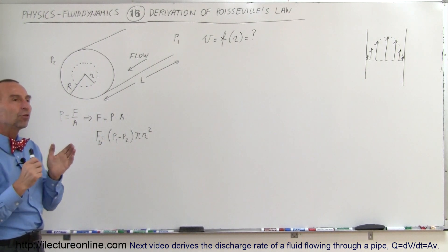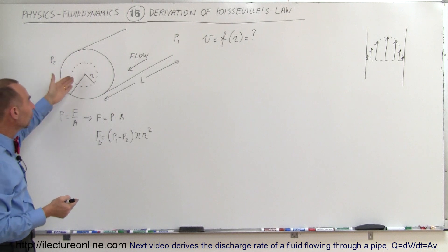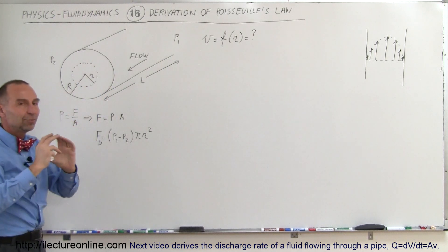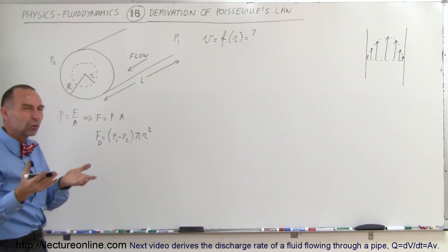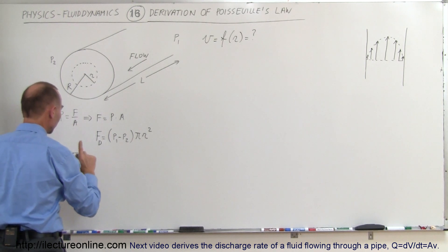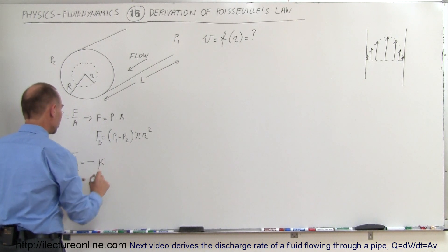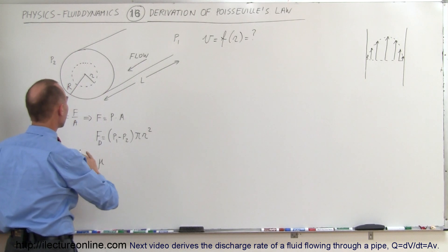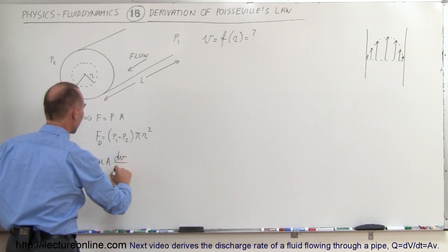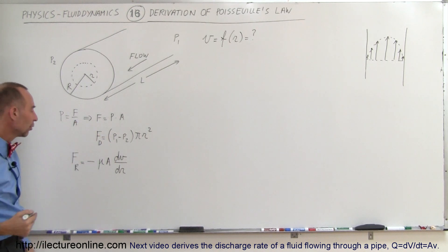Now we also need the retarding force — what's holding the fluid from flowing through the pipe. That would have to do with the viscosity of the fluid and how the portion of the flow is being retarded by friction — essentially the viscosity of the fluid. So the retarding force is equal to minus the coefficient of viscosity mu times the area times the change in velocity as a function of radius, dv/dr. That's the equation of the force that keeps the fluid from flowing through the pipe.